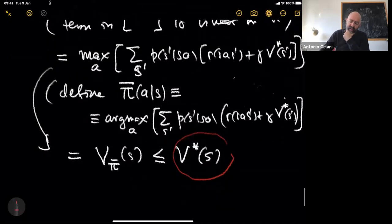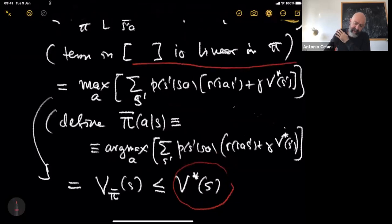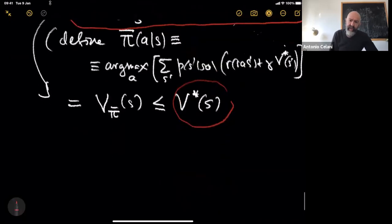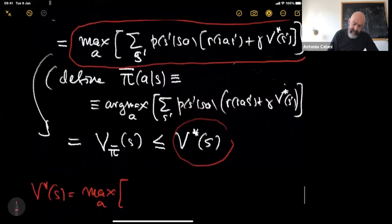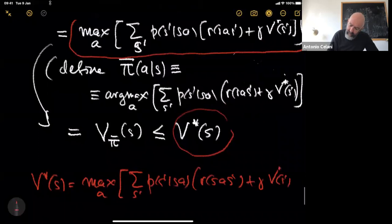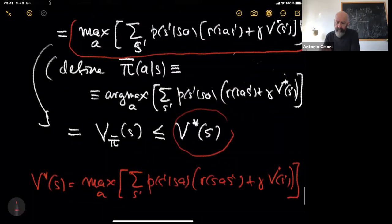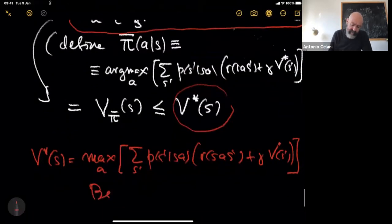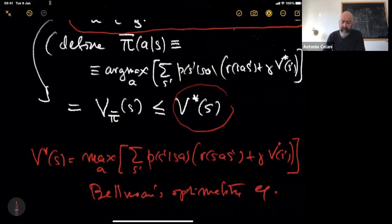As a result of this chain of inequalities, all intermediate objects must equal V*. Putting everything together, we conclude that V*(S) equals the maximum over a, sum over S' — which is Bellman's optimality equation.